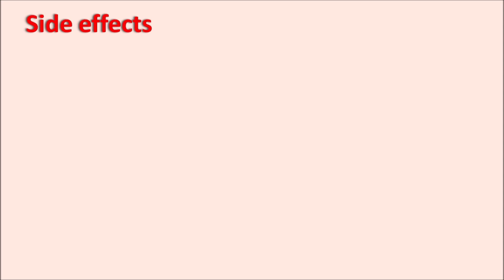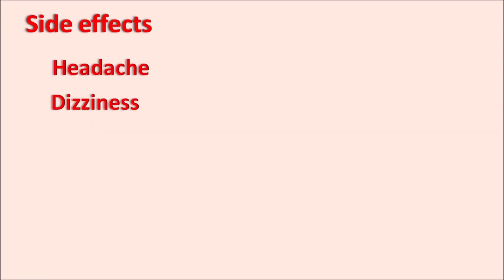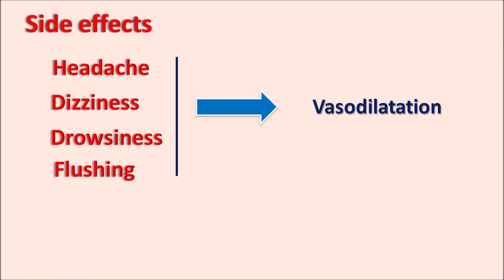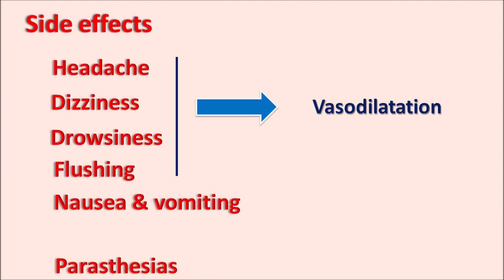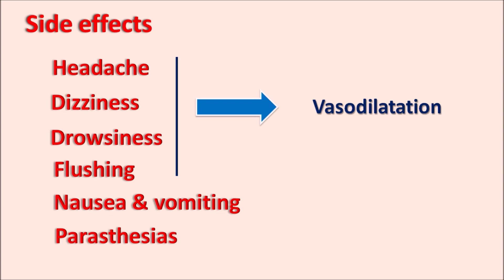What are the side effects? The side effects of nitroglycerin are mainly related to vasodilatory reactions. It can produce headache, dizziness, drowsiness, and flushing — all related to vasodilatation produced by nitroglycerin. It can also produce nausea and vomiting, paresthesia, and loss of sensation. Because of this vasodilatation, it produces severe hypotension, and whenever this hypotension is observed, it can produce some tachycardia by reflex mechanism.